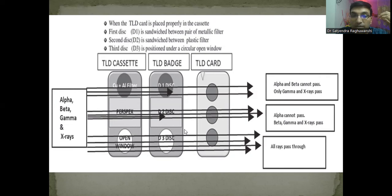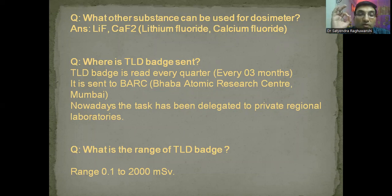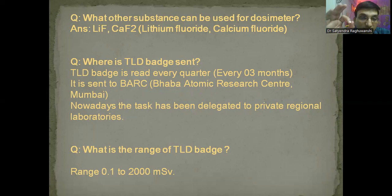How does the TLD badge work? Through the open window, all alpha, beta, gamma, and x-rays pass — registered by disc three. Through the plastic window, alpha rays cannot pass; beta, gamma, and x-rays pass. Through the metal filter (copper and aluminum), alpha and beta cannot pass — only gamma and x-rays pass. By measuring the exposure in the three discs, we determine what kind of radiation the person has been exposed to. The range of the TLD badge is 0.1 to 2000 millisieverts.